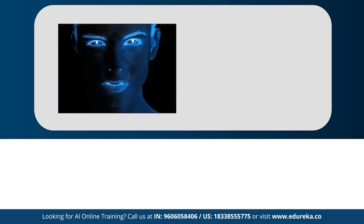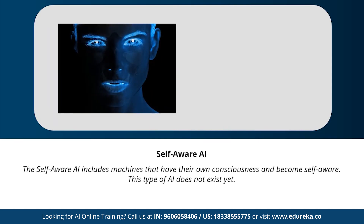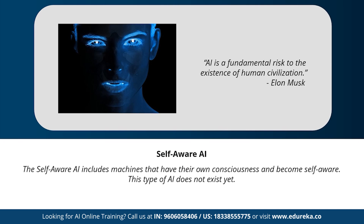Moving on to our last type: self-aware artificial intelligence. This type of AI is a little far-fetched, but in the future, achieving a stage of super intelligence might be possible. Machines having their own consciousness and becoming self-aware is a concept that geniuses like Elon Musk and Stephen Hawking have constantly warned us about. Do you ever think we'll reach the stage of artificial super intelligence? Let me know your thoughts in the comments.